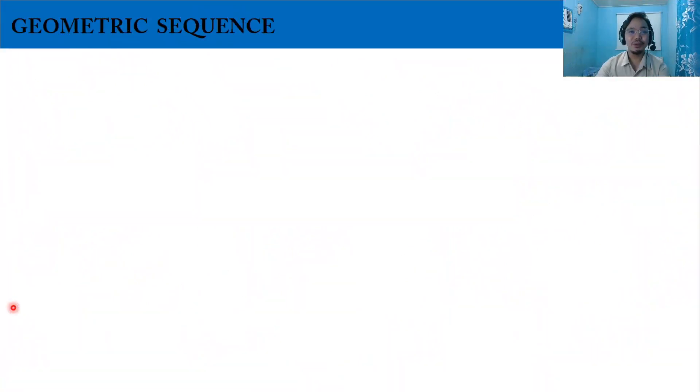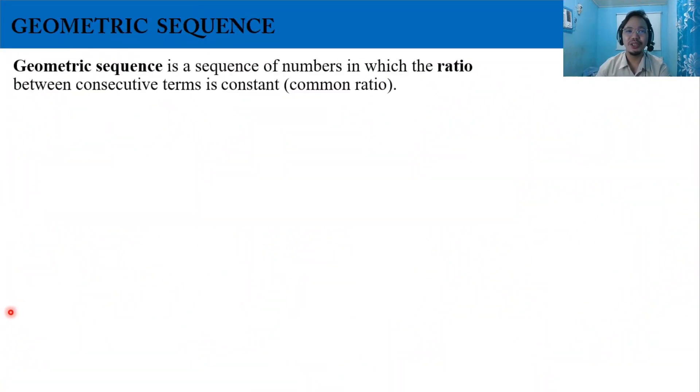In this video, we are going to discuss the geometric sequence. A geometric sequence is a sequence of numbers in which the ratio between consecutive terms is constant, also called the common ratio.